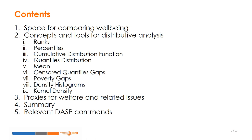These tools include ranks, percentiles, the cumulative distribution function, quantile distribution, the mean, censored quantile gaps, poverty gaps, density histograms and kernel density. We will then briefly discuss proxies for the welfare indicator and some related issues. We will finally refer to the DASP commands that can be used to estimate some of the indicators above.